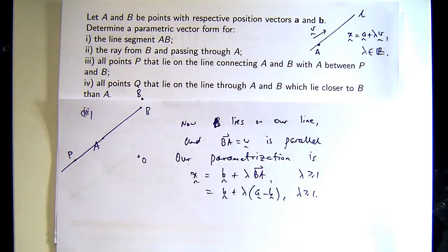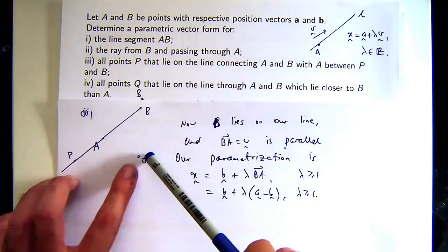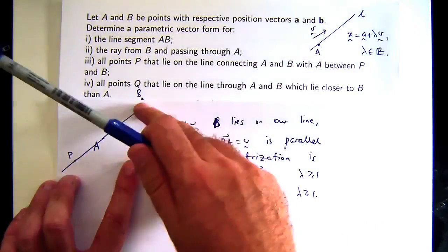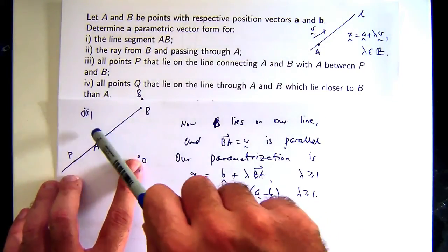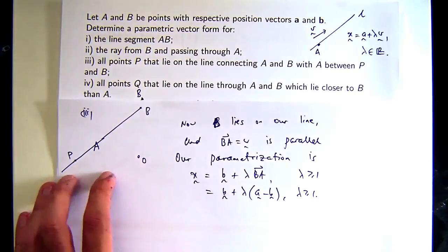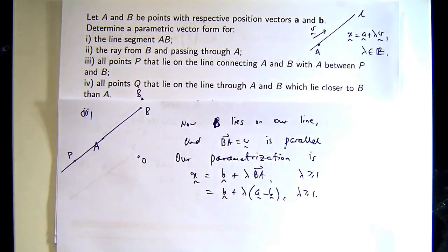Can anyone think of another way to parametrize the set of points in question? We started there and then went out to there by taking lambda greater than 1. Why don't you start there and then go that way? Start there with lambda equals 0 and then go that way. That would seem to make as much sense. So your lambda would be greater than or equal to 0 and your parametrization would be A plus lambda BA for lambda greater than or equal to 0. So there's two parametrizations.